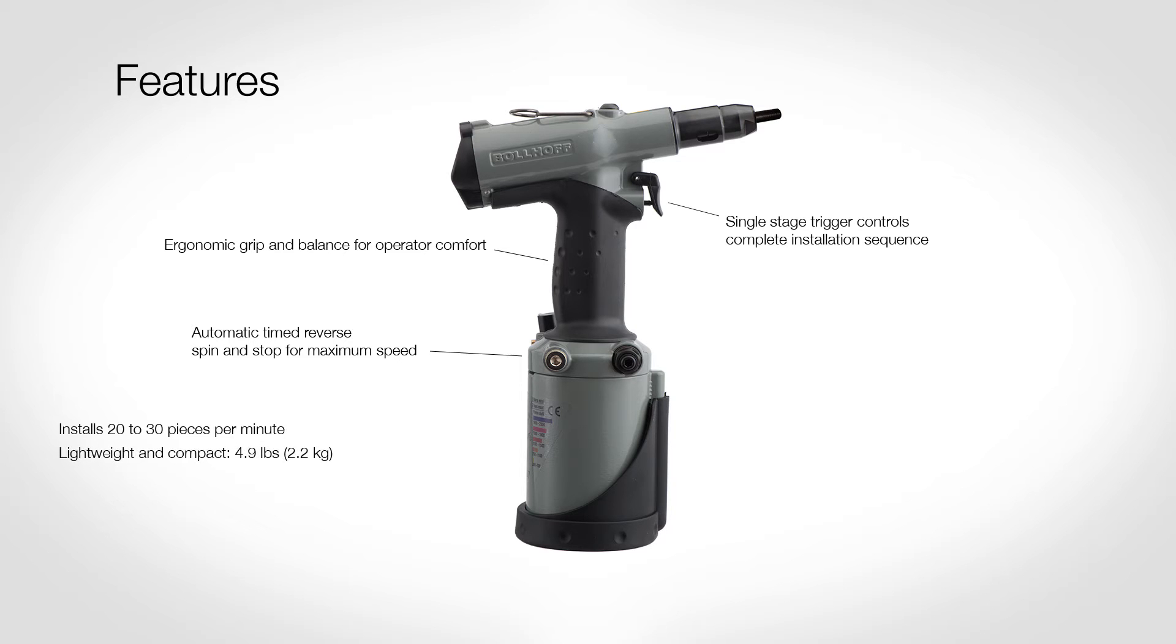Light weight and compact, 4.9 pounds, 2.2 kilograms. Max stroke 0.275 inches, 7 millimeters, 14 millimeters for P2007 PN.